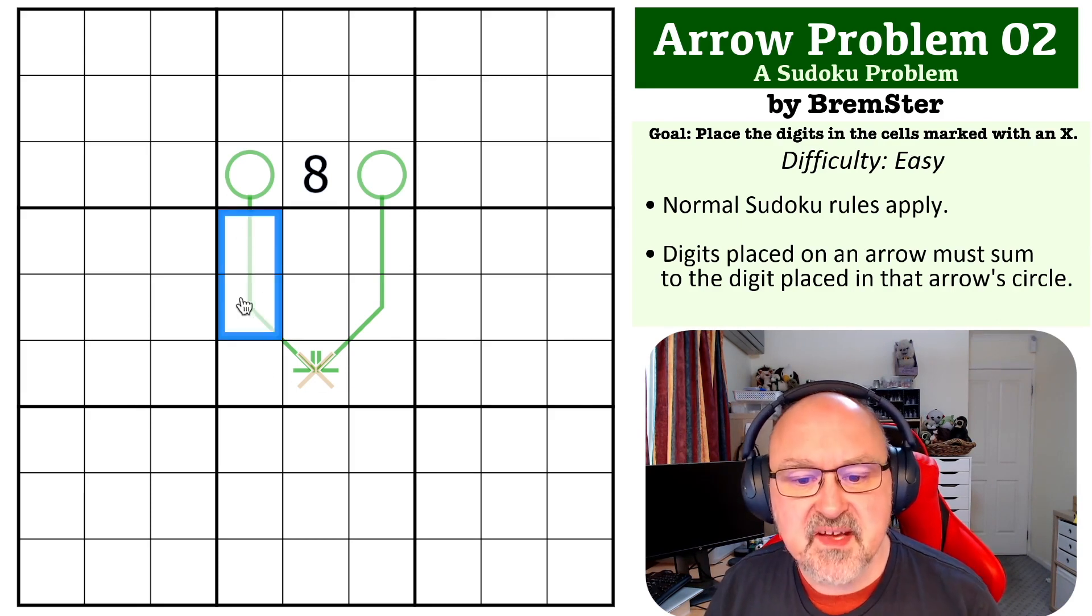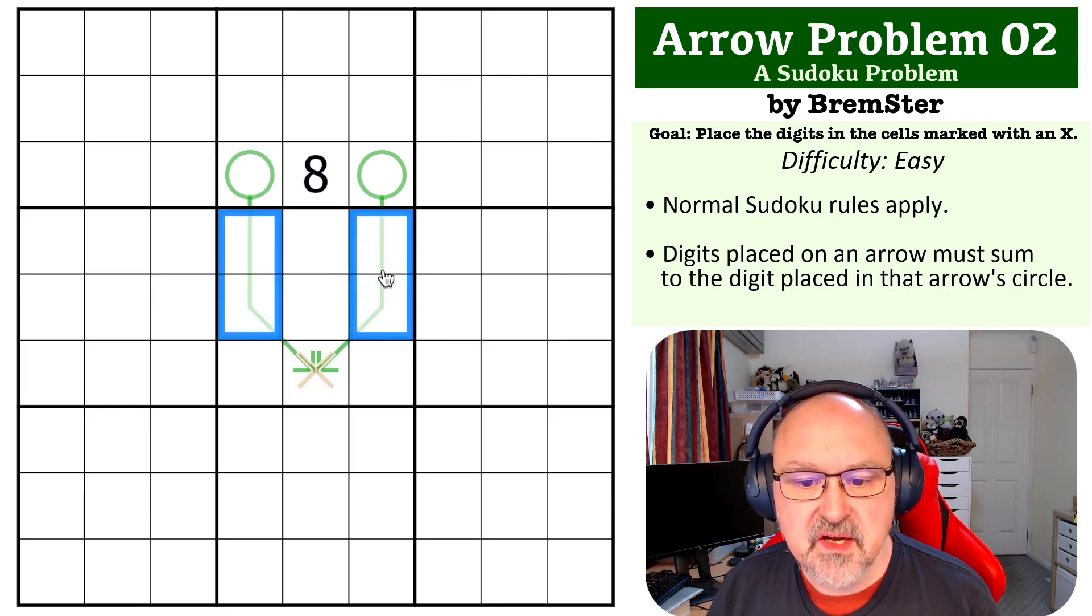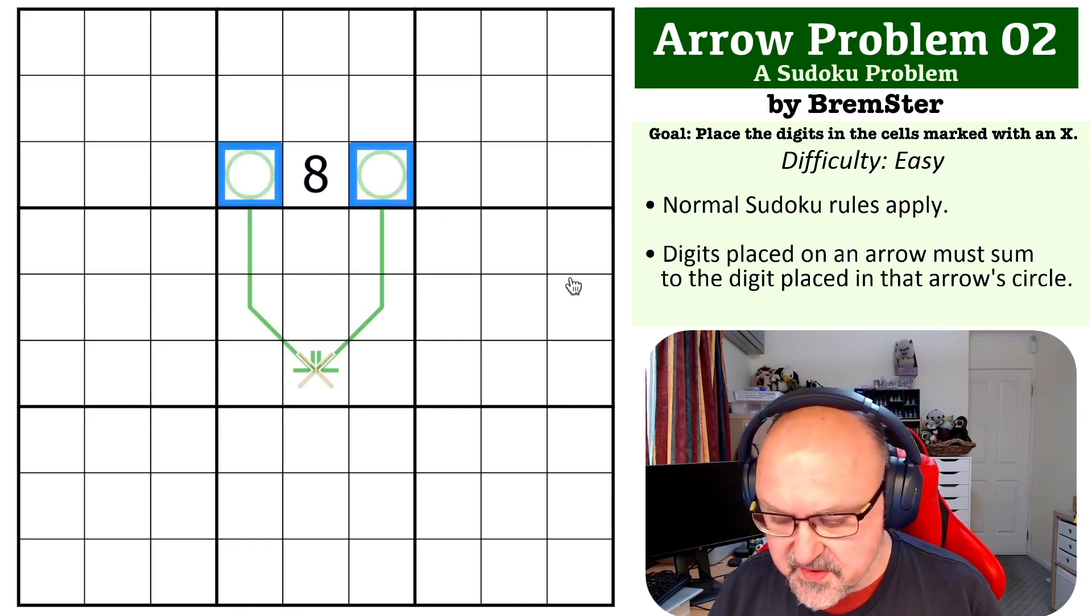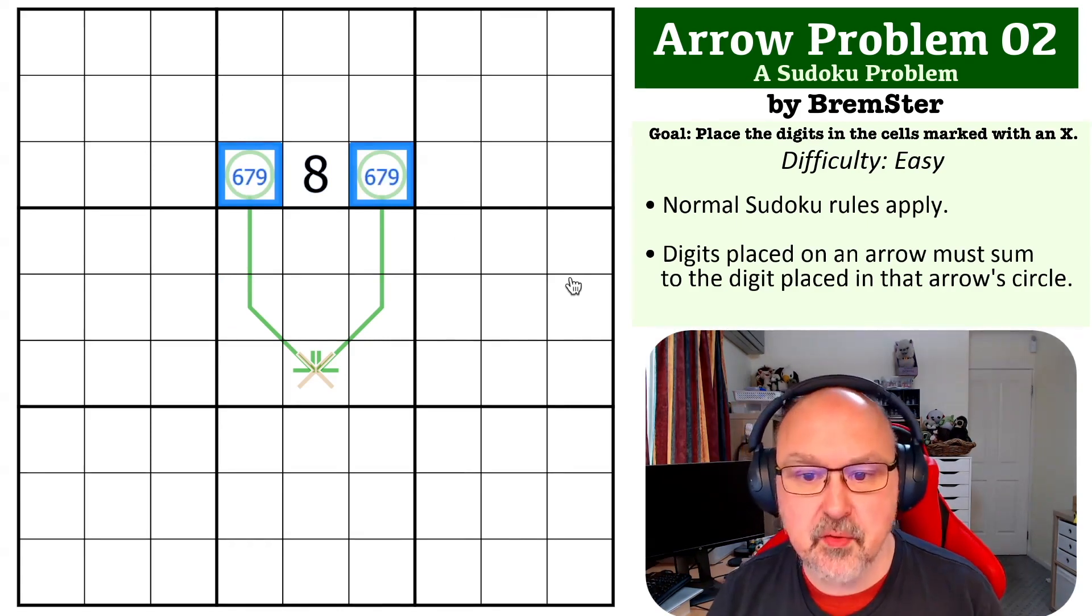So these are three-cell arrows, and on a three-cell arrow, the minimum you can put in is 1, 2, 3, which would be 6, 7, 8, or 9. So these could be 6, 7, or 9.